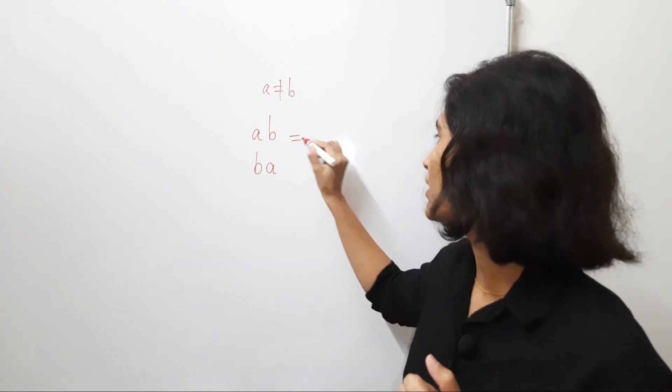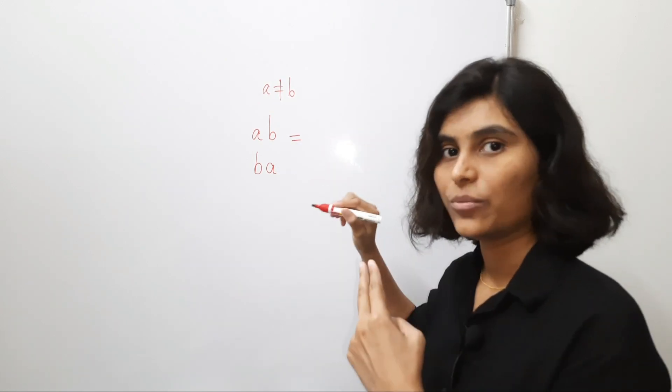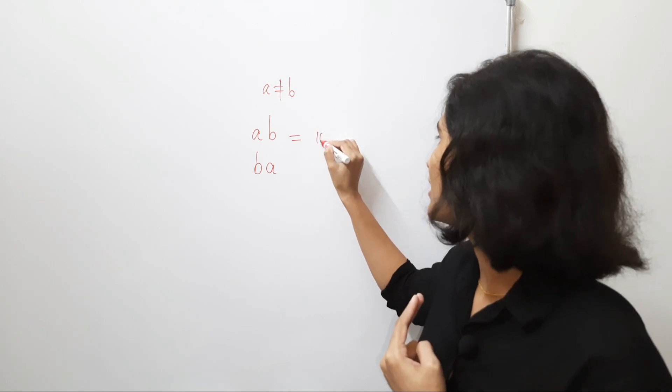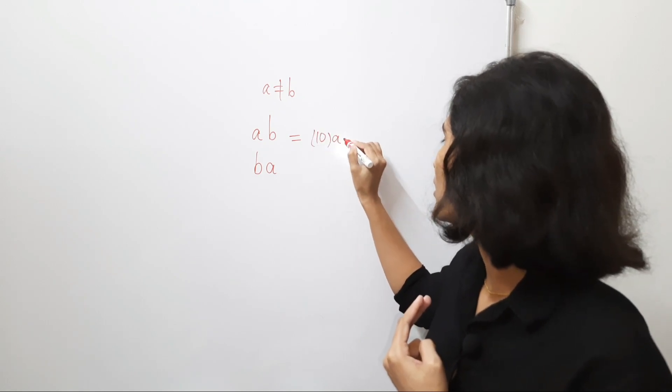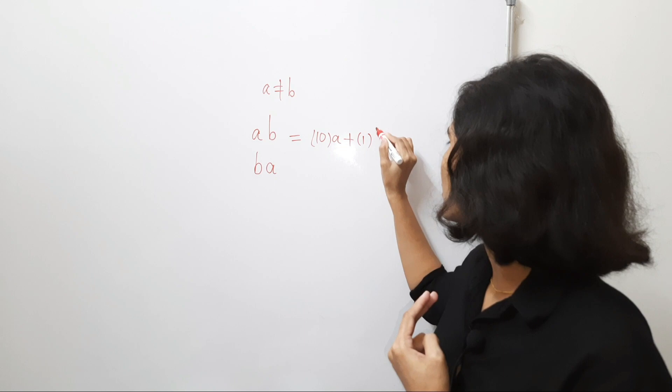let's write this number as, now AB, it is same as 10 times A plus 1 times B, right?